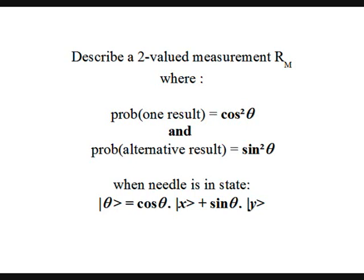The next step is to describe a two-valued measurement, Rm, where one value is obtained with probability cosine squared theta, and the alternative value with probability sine squared theta, if the needle is in state ket theta.